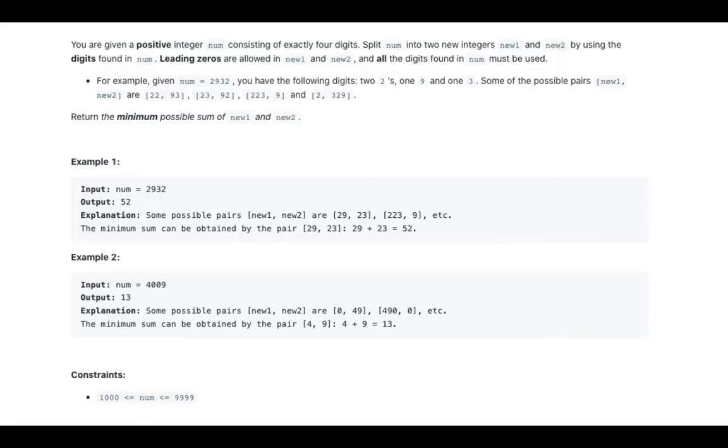You are given a positive integer num consisting of exactly four digits. Split num into two new integers new1 and new2 by using the digits found in num. Leading zeros are allowed in new1 and new2, and all the digits found in num must be used.